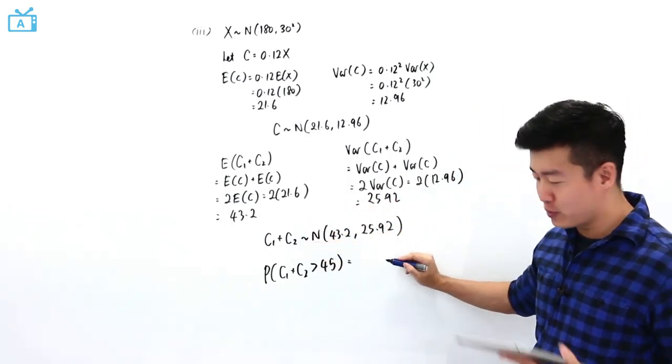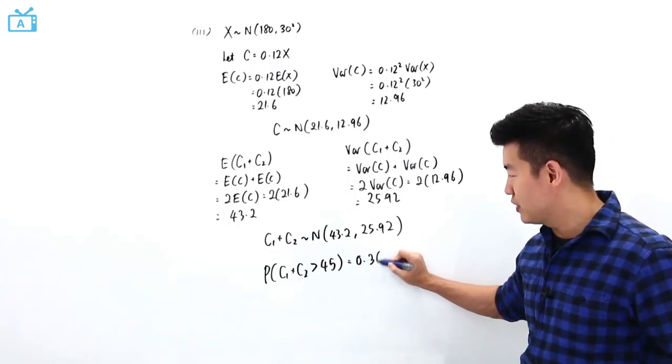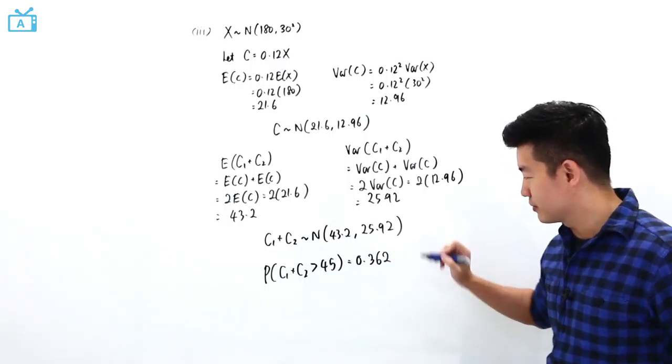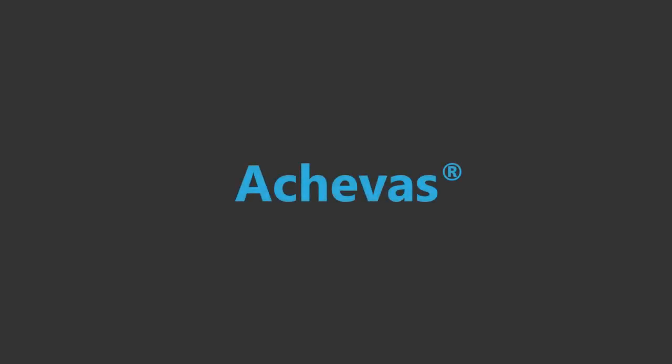The question asks for the probability that C1 plus C2 is greater than 45. Using this normal distribution in the calculator, the probability is approximately 0.362.